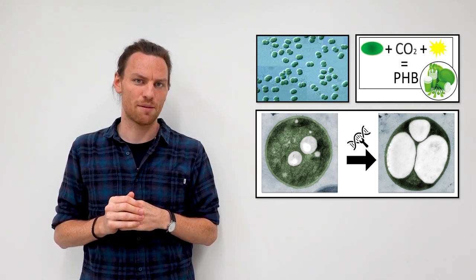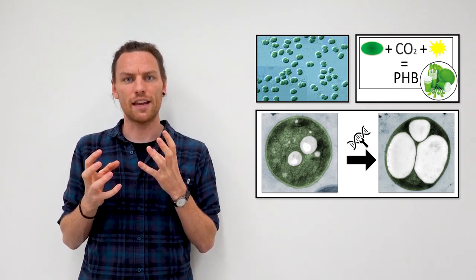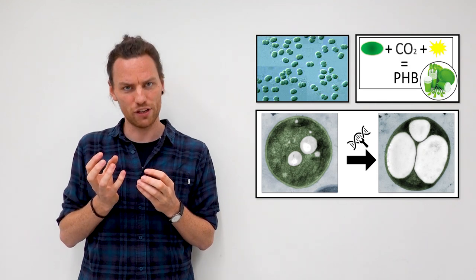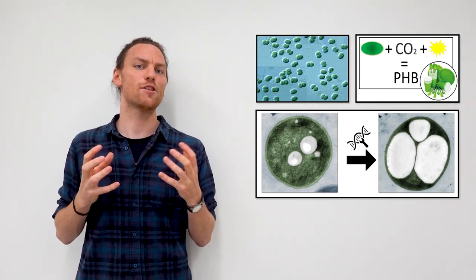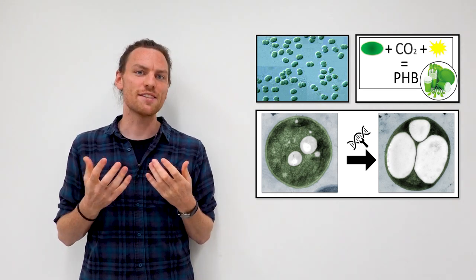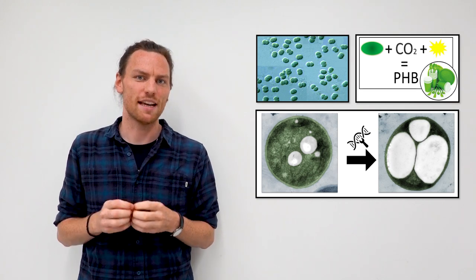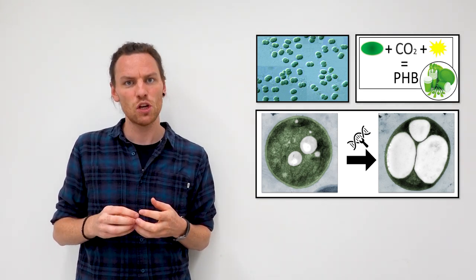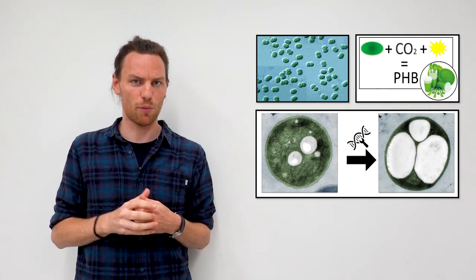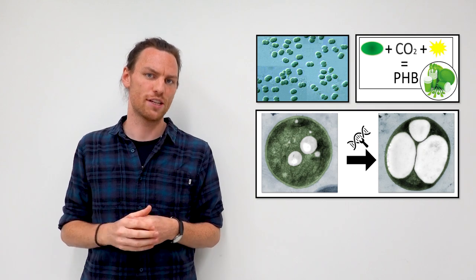The second cool feature about cyanobacteria is that under certain environmental conditions, they can use this carbon dioxide from the atmosphere and convert it into a biopolymer called PHB. And the reason why I'm so fascinated about this is because PHB is a new form of biodegradable bioplastic, which has superior material properties, while at the same time it's easily biodegradable once it's released to the environment.